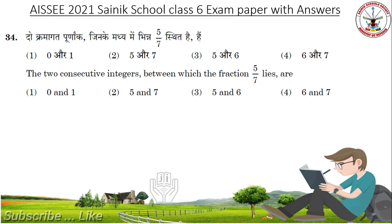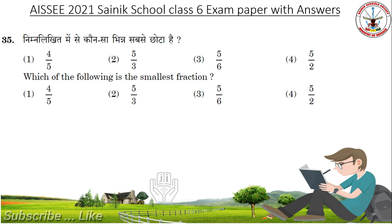Next question: The two consecutive integers between which the fraction 5/7 lies are. Answer is 0 and 1. Which of the following is the smallest fraction? Check the options. Answer is 4 by 5.